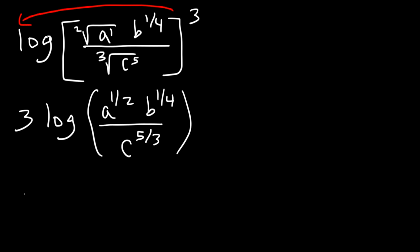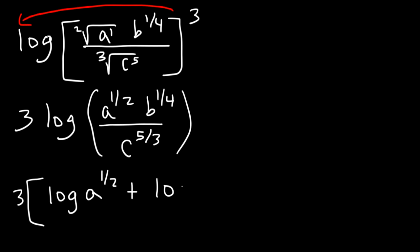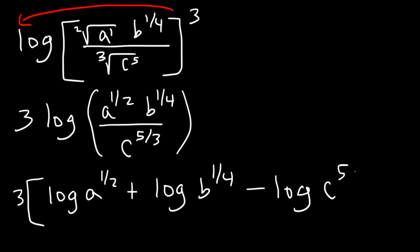So now we can expand it. a is on top, and so is b, so it's going to be positive log a to the one-half plus log b to the one-fourth. c is on the bottom, so it's going to be minus log c to the 5 over 3.